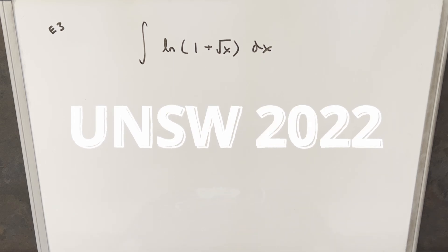Okay, we have here another integral from the UNSW integration B. This one is from 2022. This was extra problem number three. We have the integral of natural log of one plus the square root of x dx.